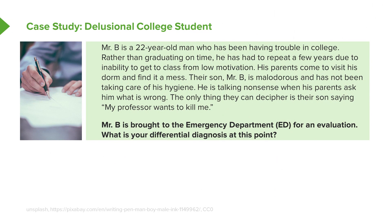Consider this case study. Mr. B is a 22-year-old man who has been having trouble in college. Rather than graduating on time, he has had to repeat a few years due to an inability to get to class because of low motivation. His parents come to visit him and find his dorm room a complete mess. Mr. B is malodorous and has not been taking care of his hygiene. He talks nonsense when his parents ask him what's wrong, and the only thing they can decipher is their son saying, "my professor wants to kill me."